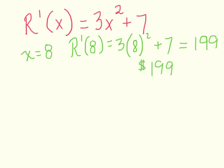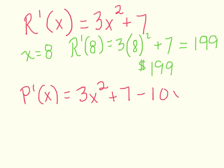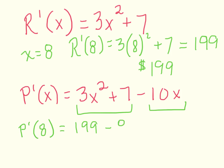Our marginal profit function is made up of our marginal revenue function minus our marginal cost function. If we look again at a production level of 8, that would simply mean $199 minus $80 gives us a marginal profit of $119, meaning that at a production level of 8, the profit on the production of one more item would be $119.